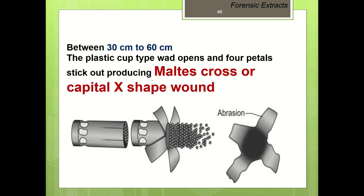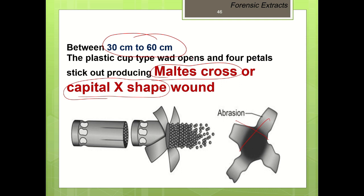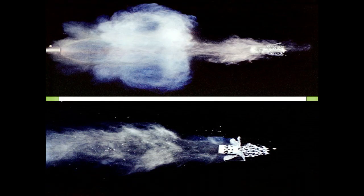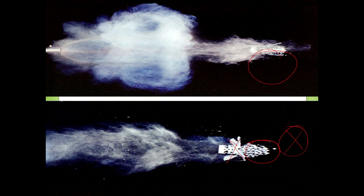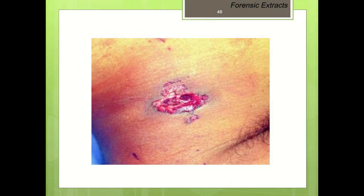A characteristic pattern known as the Maltese cross pattern — shaped like a capital X — is characteristically seen between 30 cm and 60 cm. This is due to the opening of four petals of the shotgun cartridge, which is made of plastic, creating a capital X-shaped injury. You can observe the abrasion in the form of a capital X — this is the Maltese cross pattern characteristically seen in shotgun wounds.